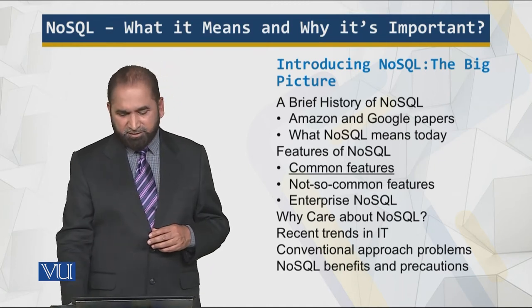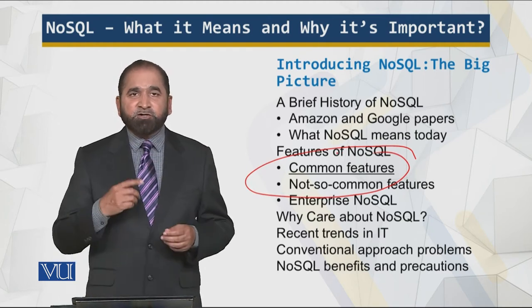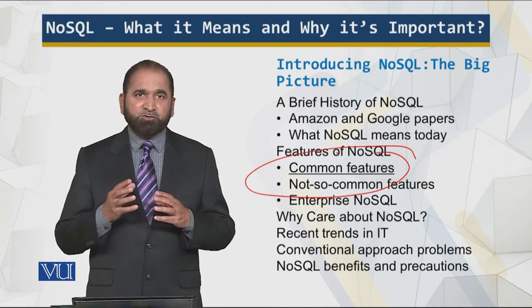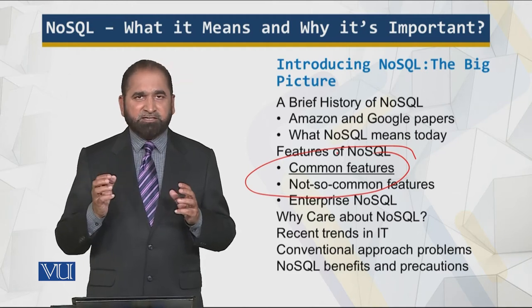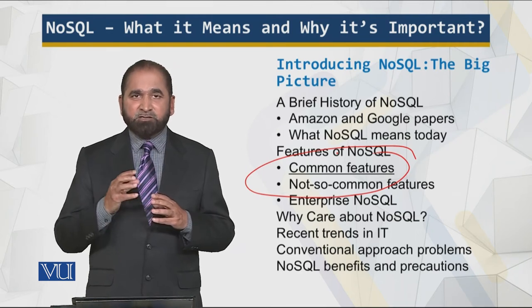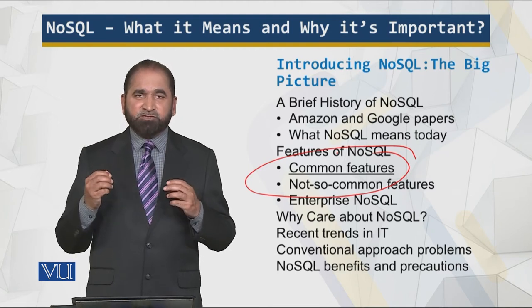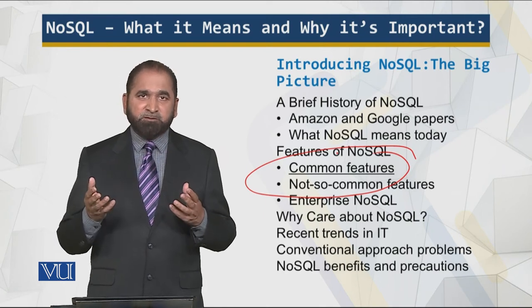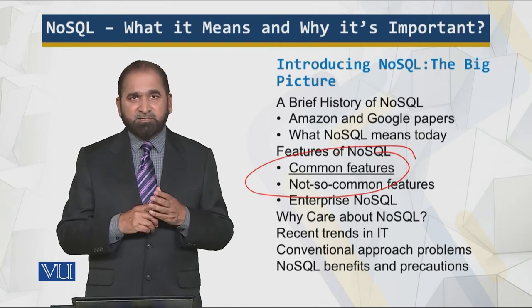Now, looking at the common features of NoSQL: first, NoSQL is schema-free. You can just get the data and place it into a NoSQL database — you don't have to design the schema upfront, you can do it later. Second, NoSQL is not relational. You don't have to have tables with established relations, because when we talk about tweets or comments, that traditional relational aspect is not there.